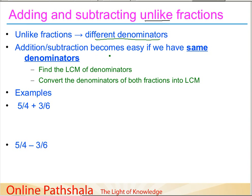To convert unlike fractions into like fractions, we simply find the LCM of the denominators — that is the first step. Then we convert the denominators into the LCM for both fractions by multiplying by a suitable number, and then we proceed as we did for like fractions. This will be clearer when we take an example.